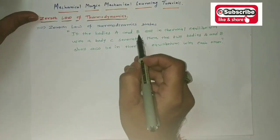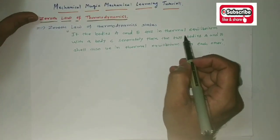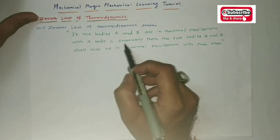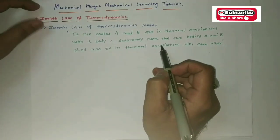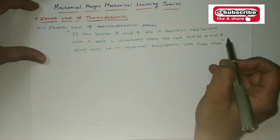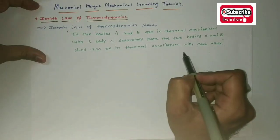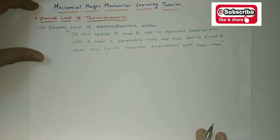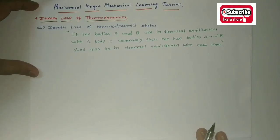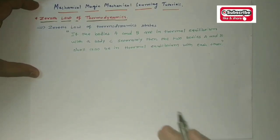According to the law, it states that if the bodies A and B are in thermal equilibrium with body C separately, then the two bodies A and B shall also be in thermal equilibrium with each other. I will show this representation.